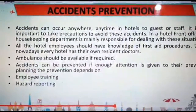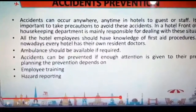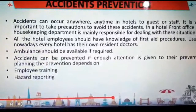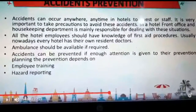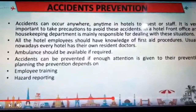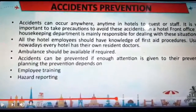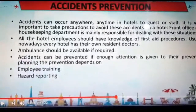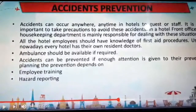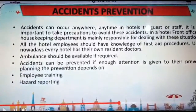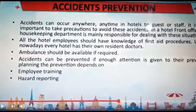We shall start with section 8 of unit 5 and talk about accidents and their prevention. Accidents can occur anytime, anywhere — exactly why they are called accidents. It can happen at the hotel to a guest or staff, and it is very important to take proper precautions. In a hotel, the front office and housekeeping department are mainly responsible for dealing with these situations. The hotel's employees should have thorough knowledge of first aid procedures. Every hotel nowadays has their own resident doctor. An ambulance should be available when required. Accidents can be prevented if enough attention is given to prevention planning, and prevention depends on employee training and hazard reporting.